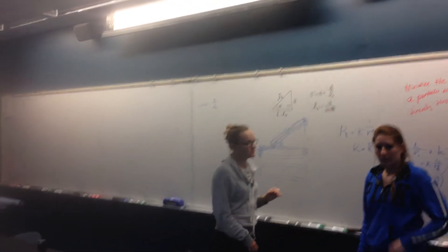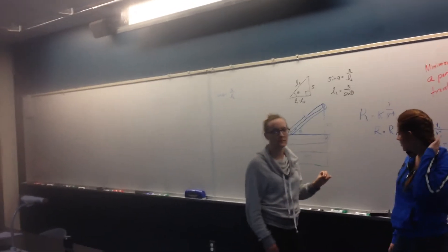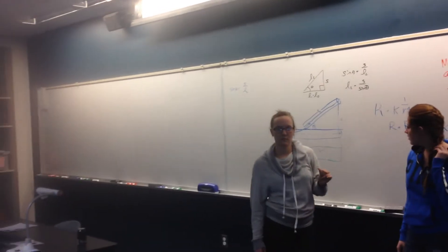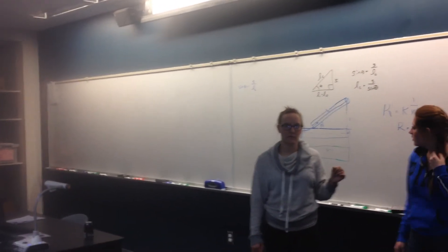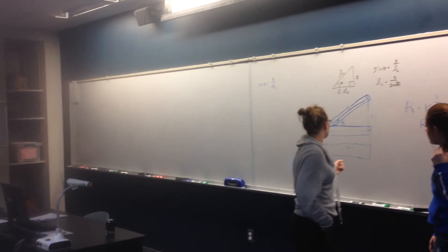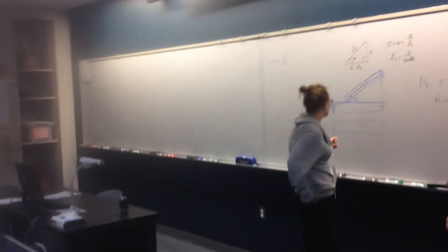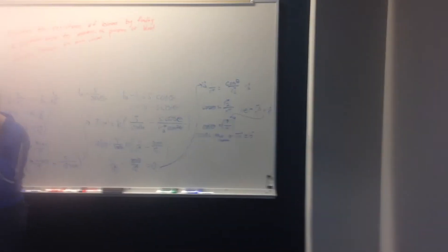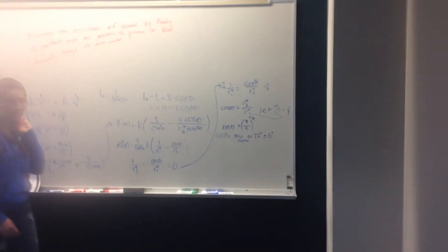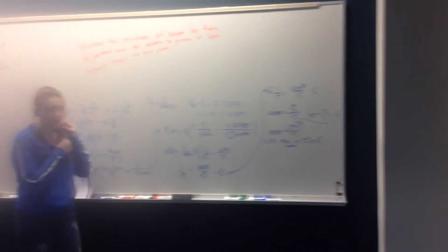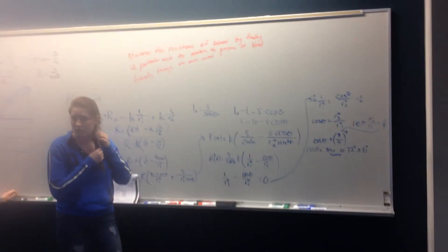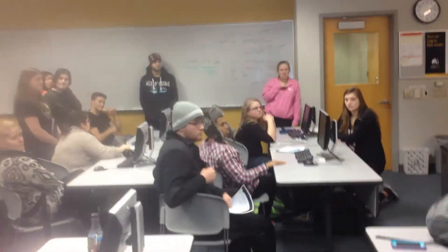In particular, this says that if the smaller vessel is only three quarters as big around as the first one, then the appropriate angle for splitting is approximately 72 degrees, plus or minus 6. Great, shall we clap for them?